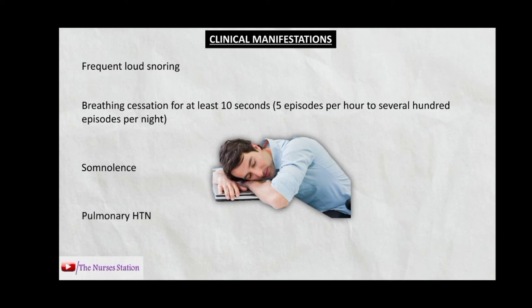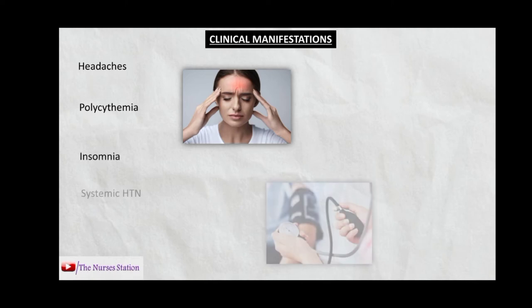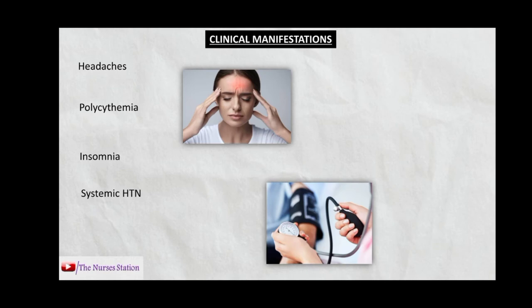Pulmonary hypertension can be present. The patient may experience headaches. Polycythemia — an abnormally increased number of red blood cells in the blood — can occur, as the body attempts to combat hypoxia. Insomnia, systemic hypertension, and irritability are also possible manifestations.